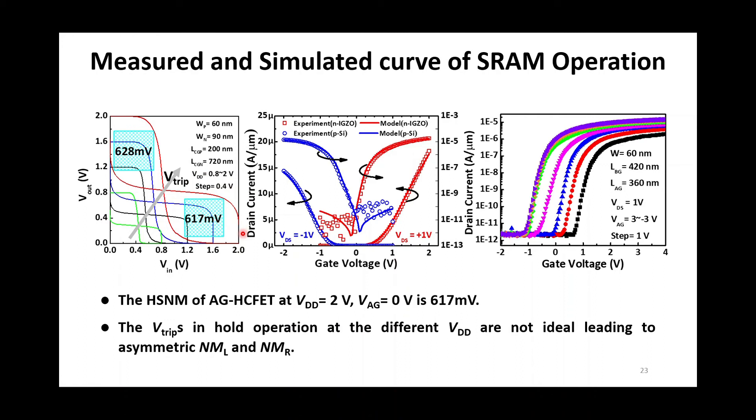The curve shows a 617 mV hold noise margin as VDD equals 2V. However, the trip voltage doesn't follow the ideal half VDD, leading to asymmetric left and right noise margin. It's needed to be optimized.